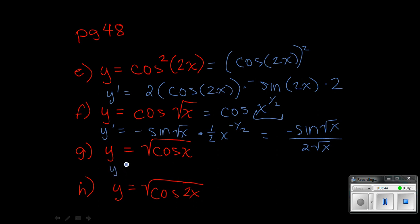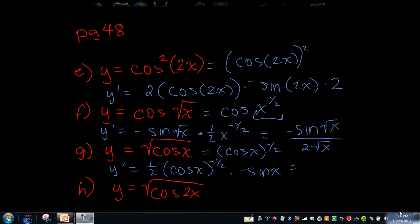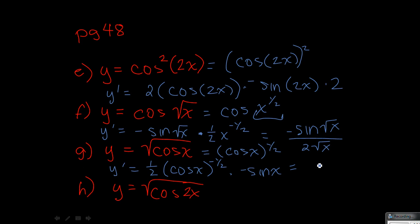On G, we're really looking at cosine x to the 1 half power. So the 1 half would be first. It's going to be 1 half cosine x to the negative 1 half times the derivative of cosine x, which is negative sine x. And then you would stop there because the derivative of x is just 1. You could simplify that and write it as negative sine x over 2 root cosine x.